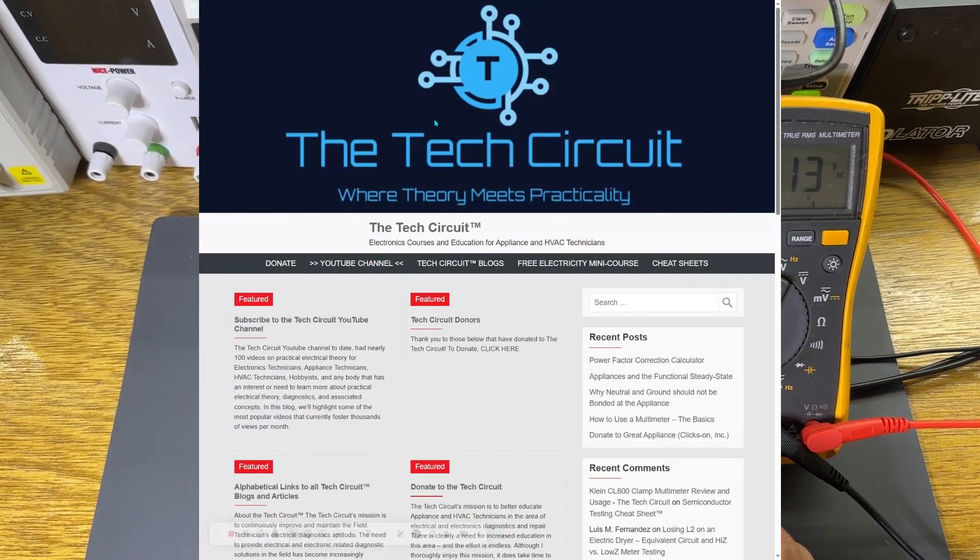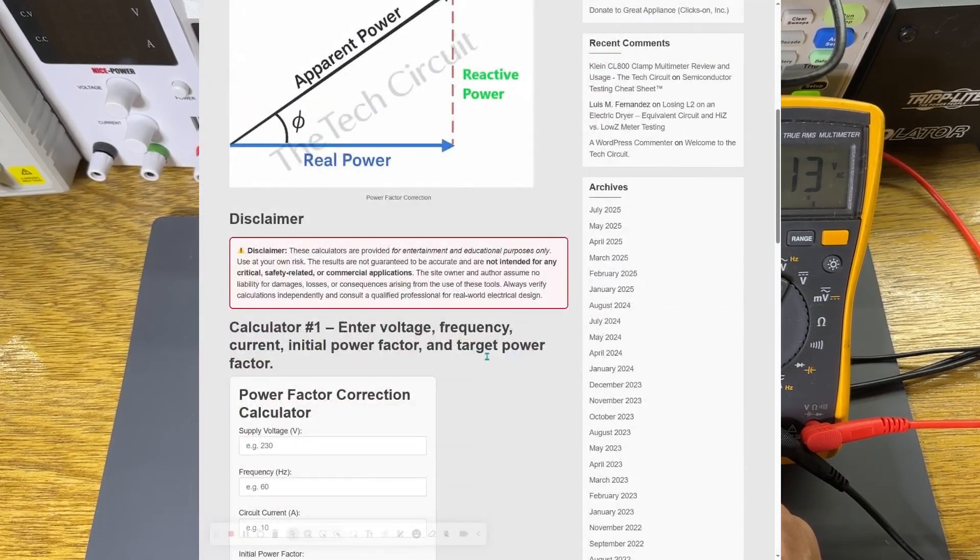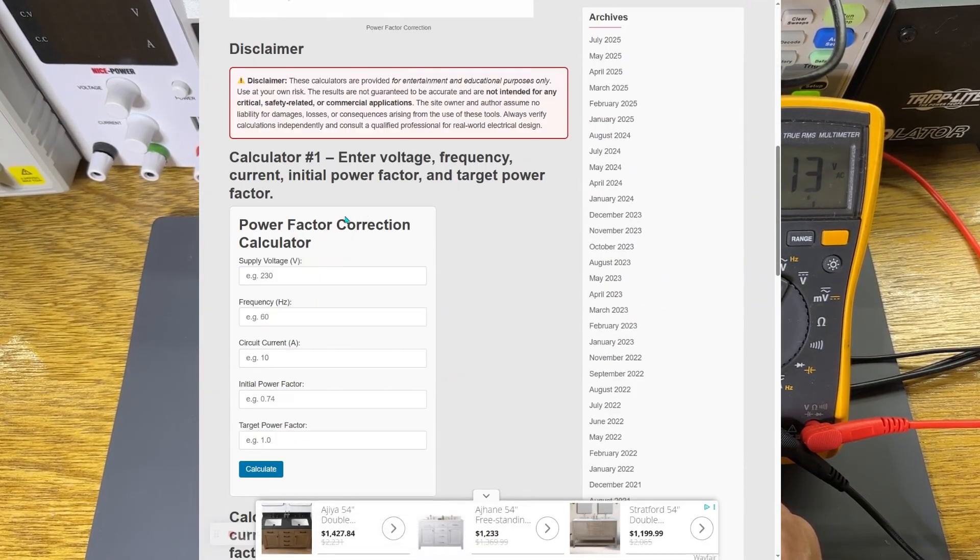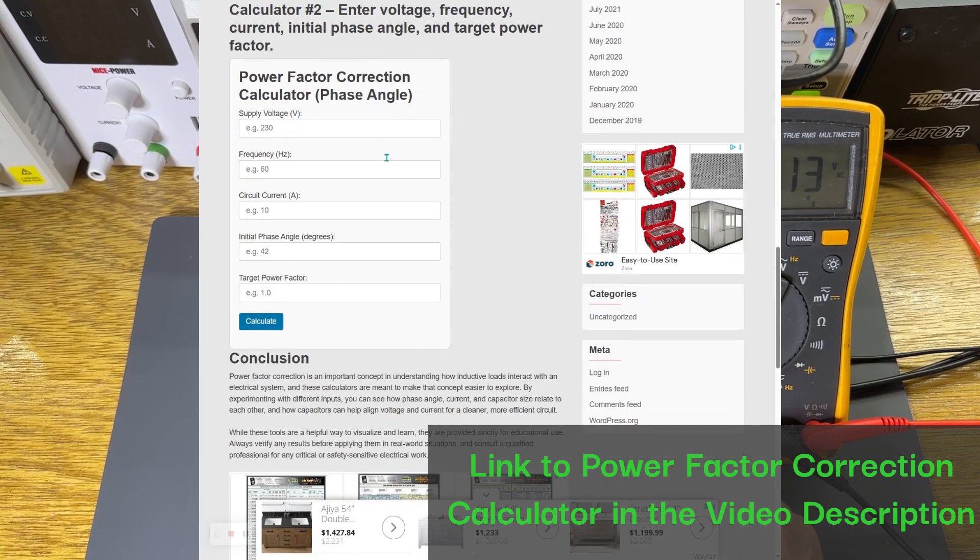On my website, there are two calculators. One allows you to enter the initial power factor, and the second one, the phase angle. However, since we can read the phase angle directly from the oscilloscope, we'll use the second calculator. There is a link to this calculator in the video description below.